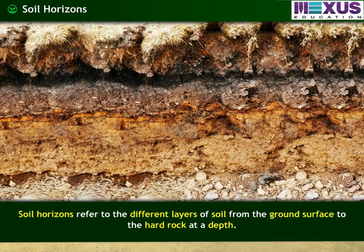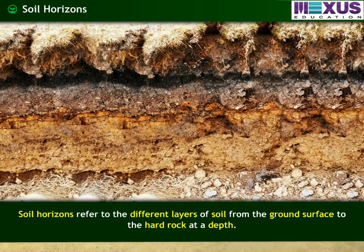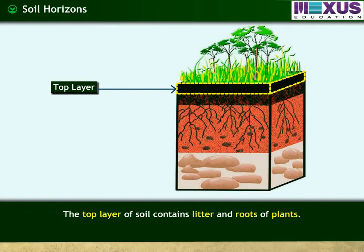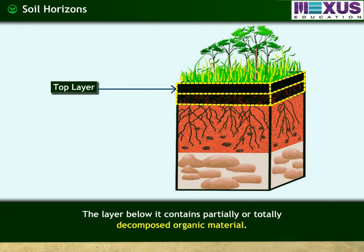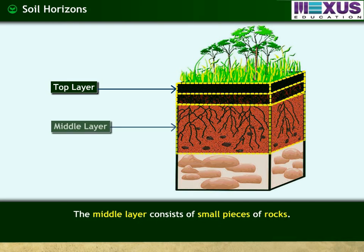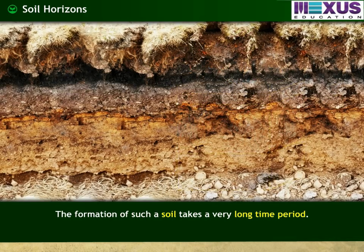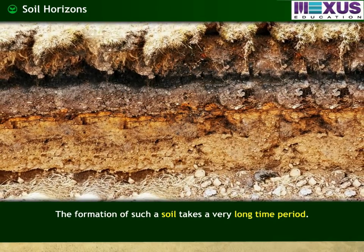Soil horizons refer to the different layers of soil from the ground surface to the hard rock at a depth. The top layer of soil contains litter and roots of plants. The layer below it contains partially or totally decomposed organic material. The next layer consists of small pieces of rocks, and the lowest layer is made up of unweathered rocks. A soil with well-developed horizons is called a mature soil.